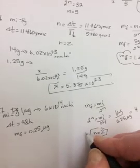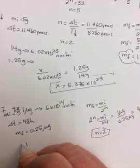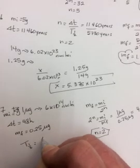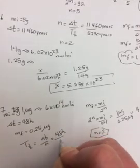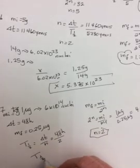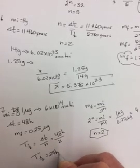And it wanted to know half-life, so T to the 1-half will equal delta T over N, 48 hours over 2. Half-life should be 24 hours.